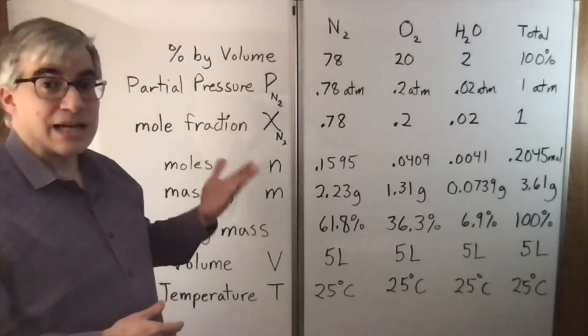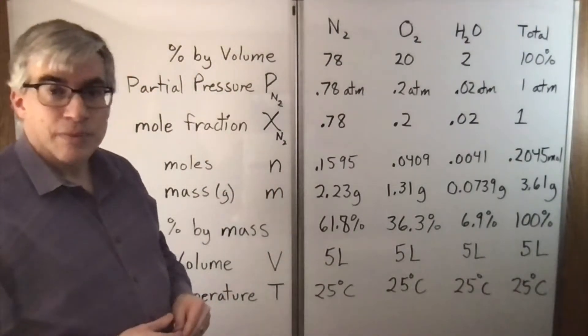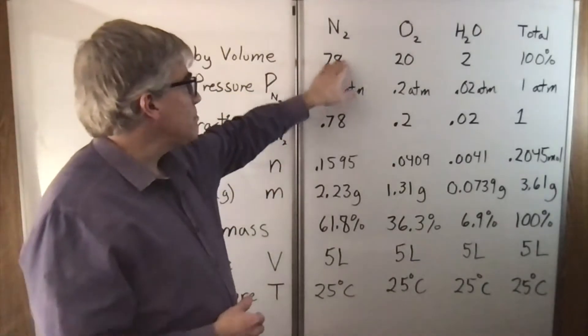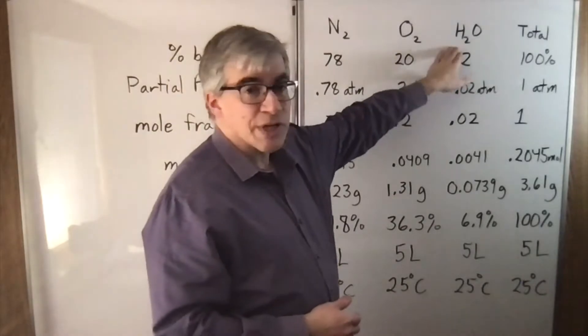Here's an example of a gas mixture. I'm going to change percent by volume to percent by mass. We're going to have 78% by volume nitrogen, 20% oxygen, and 2% water vapor.